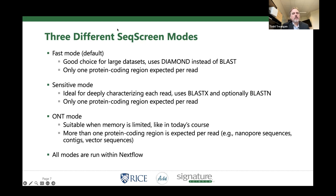Fast mode uses Diamond, which is a wonderful tool that accelerates our BLASTX searches. Importantly, fast mode only expects one protein-coding region per read. So if you have very long reads and you try to run fast mode, you're not going to get a good result — you'll just get one coding region annotated per read, which you probably don't want. That's why the ONT mode was created.